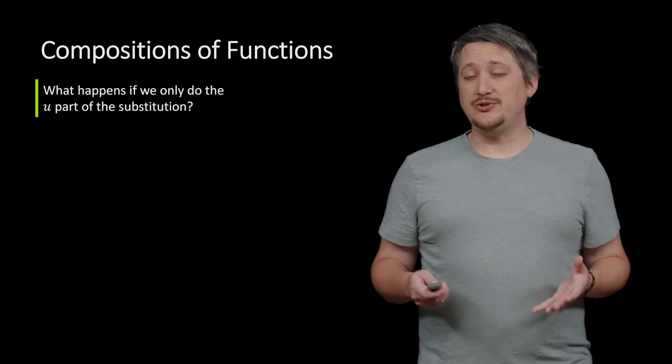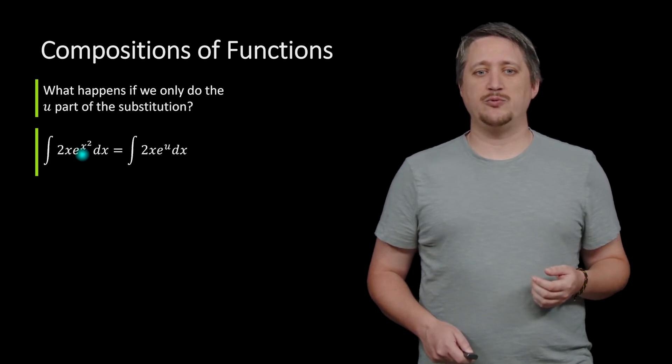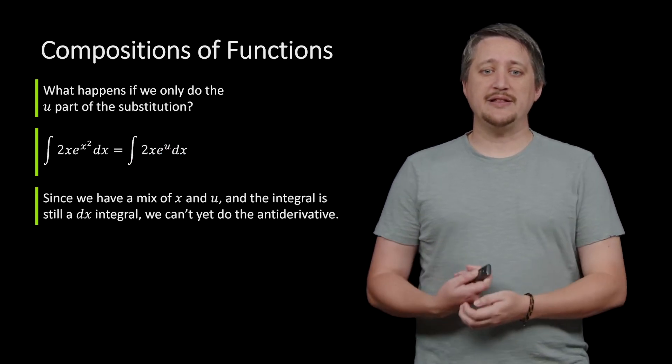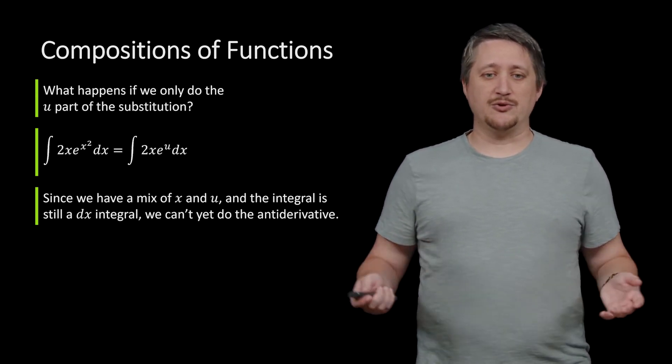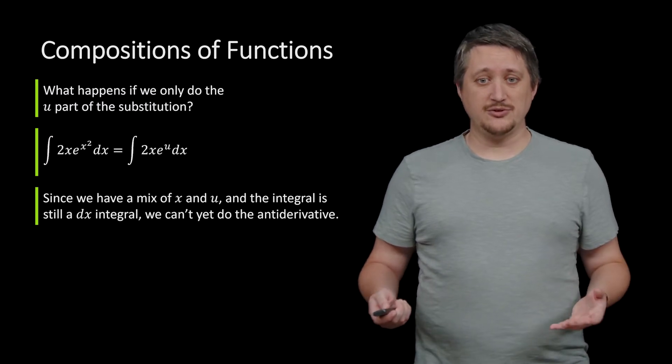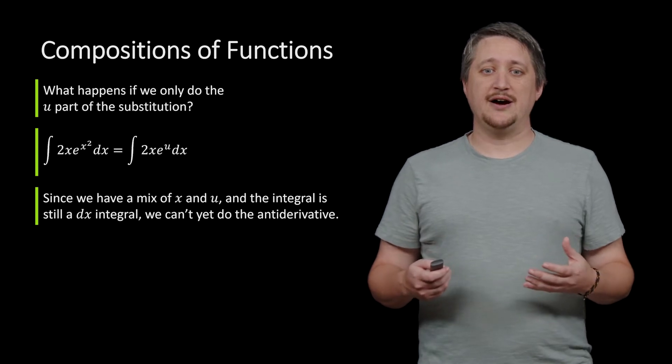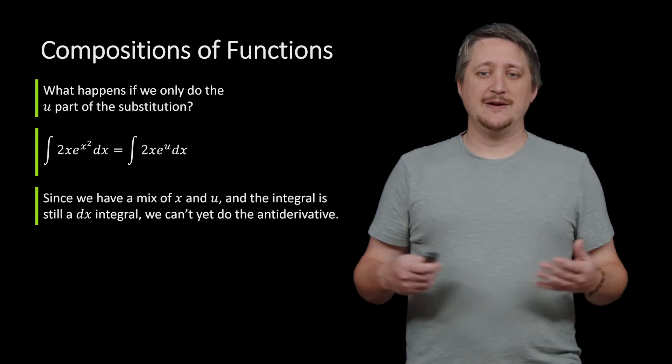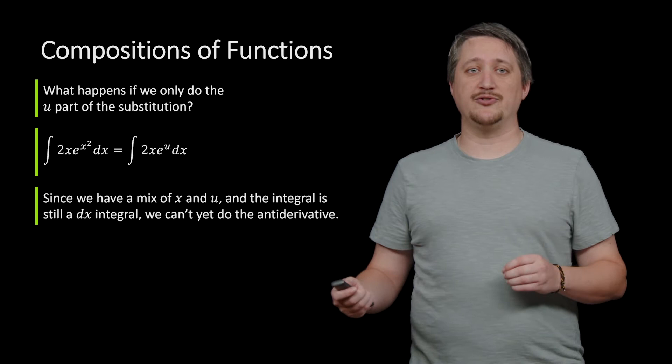So in particular, what happens if we only do the u part of the substitution? Well, if I replace that x squared with a u but I leave everything else, now I have an x, a u, and a dx, meaning that since we have a mixture of this x and u, and u depends on x, that integral is still a dx integral. We can't yet do the antiderivative. If we have a mixture of letters in there and I've only done partial conversion, there's really nothing to do with it. So we need to remember that we need to translate all of the variables over.